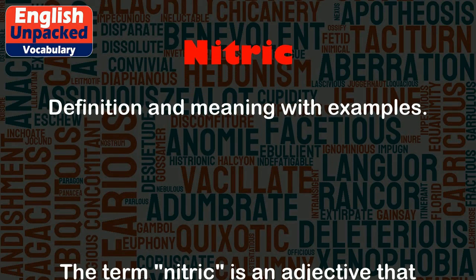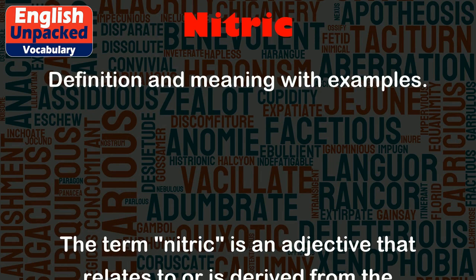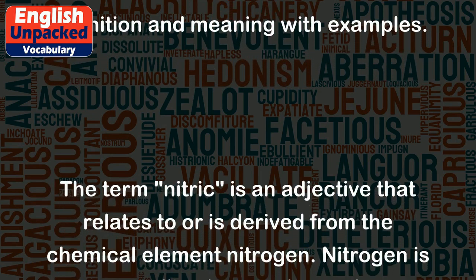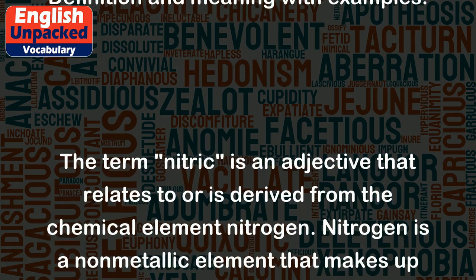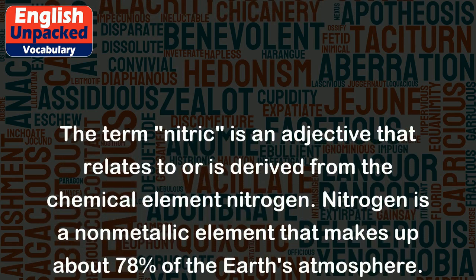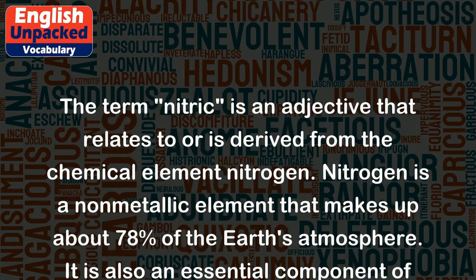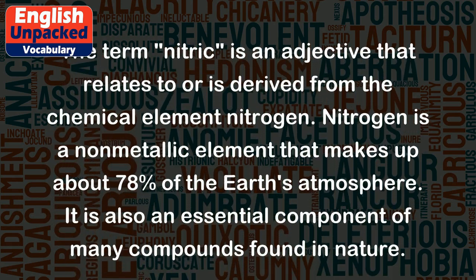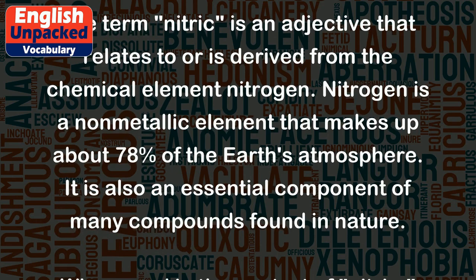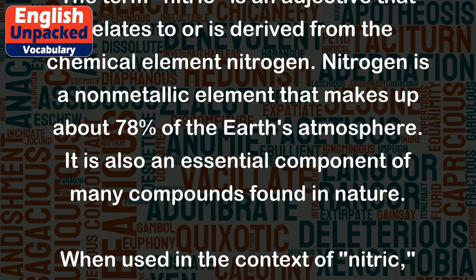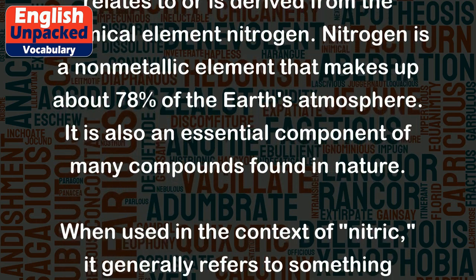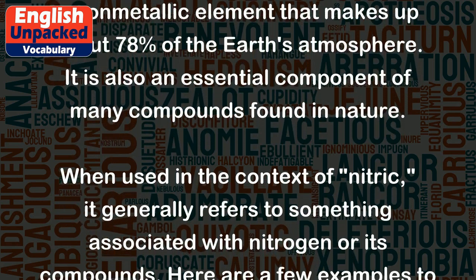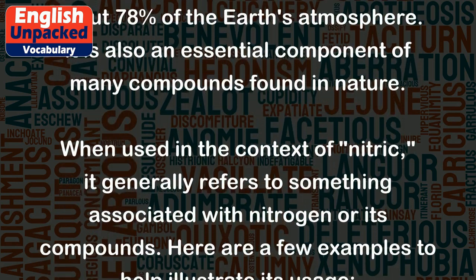Nitric. The term nitric is an adjective that relates to or is derived from the chemical element nitrogen. Nitrogen is a non-metallic element that makes up about 78% of the Earth's atmosphere. It is also an essential component of many compounds found in nature. When used in the context of nitric, it generally refers to something associated with nitrogen or its compounds.